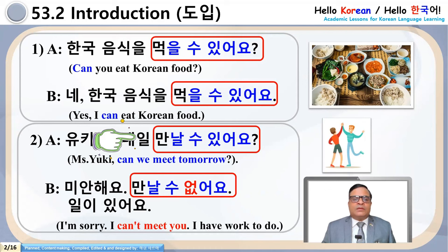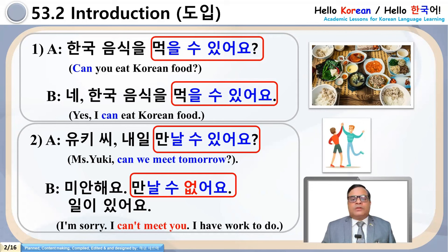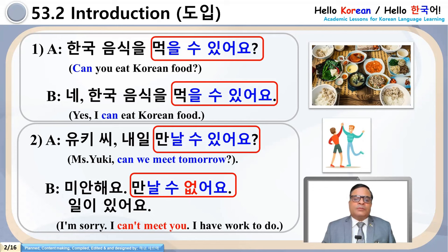Coming to the second example, in sentence B: 'I can't meet you.' Now you have some idea — Ulsu Itta and Ulsu Akta are similar to 'can' or 'cannot' in English.